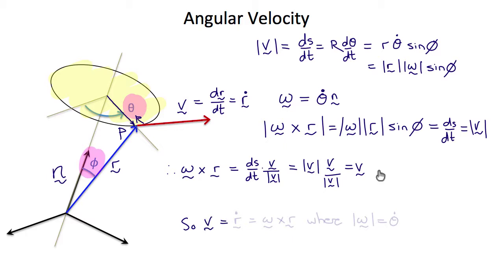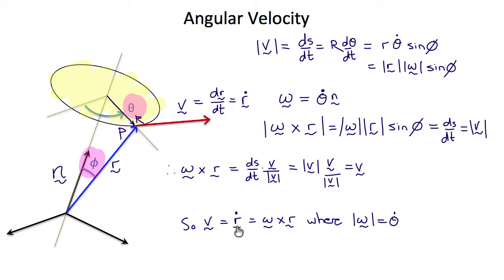So we now have a vector definition of the angular velocity omega in terms of the position vector and the velocity vector. So v, which is r dot, is omega cross r, where the magnitude of omega is θ-dot.